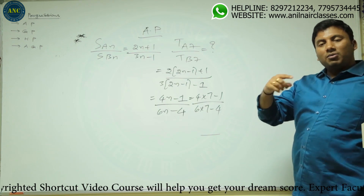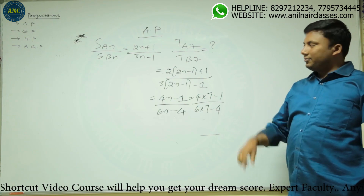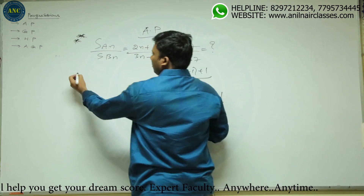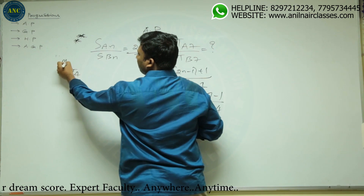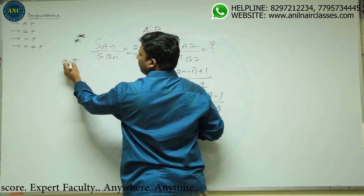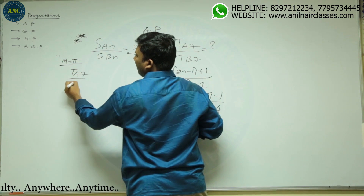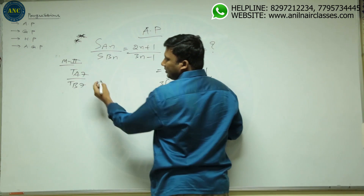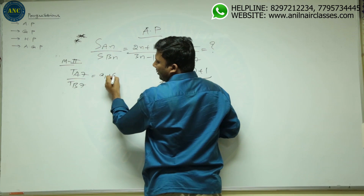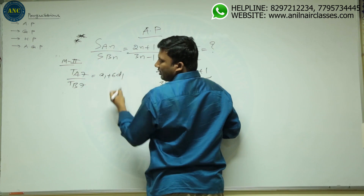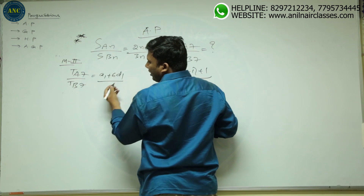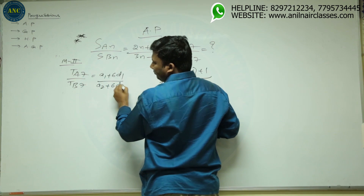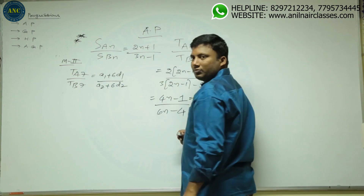Let me do this problem in a different way. See here — Method 2. T_A7 divided by T_B7. What is T_A7? It is A1 plus 6D1, divided by A2 plus 6D2.